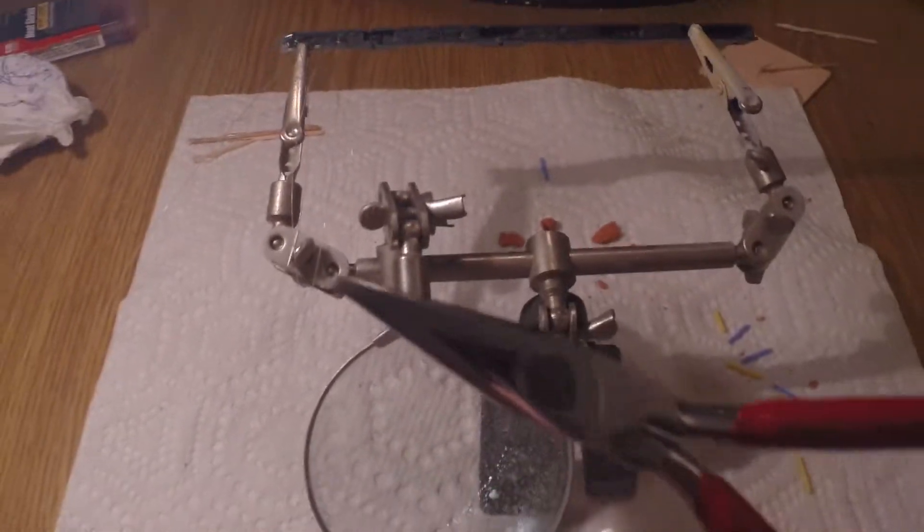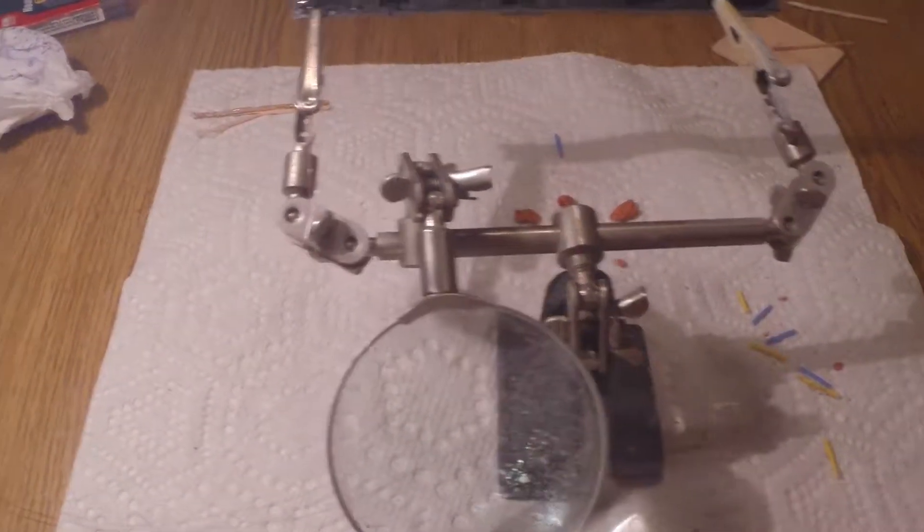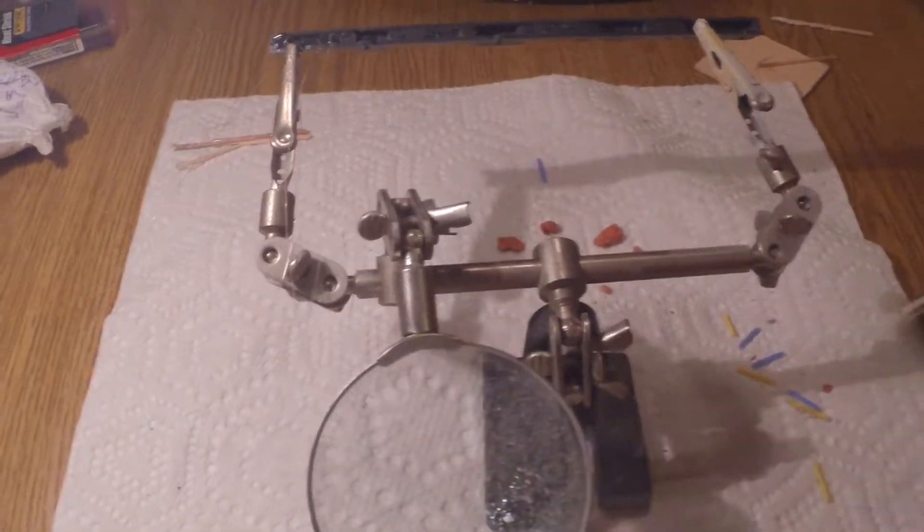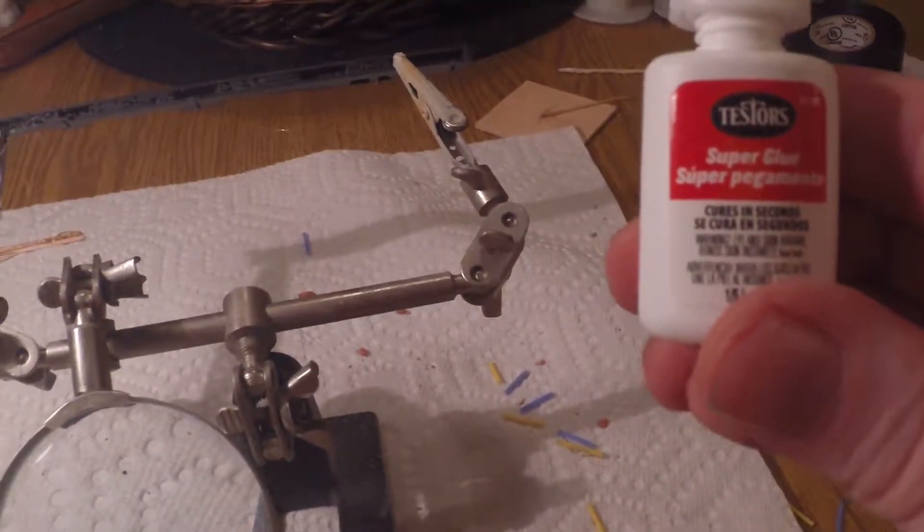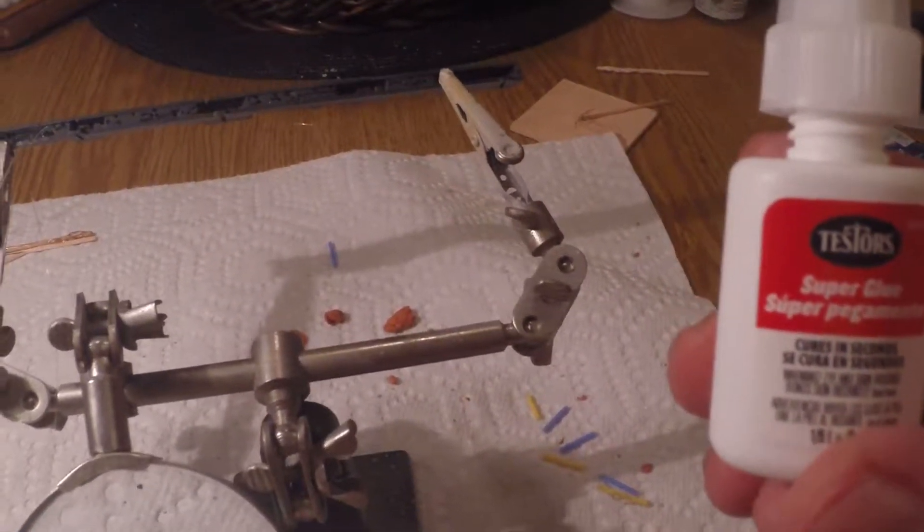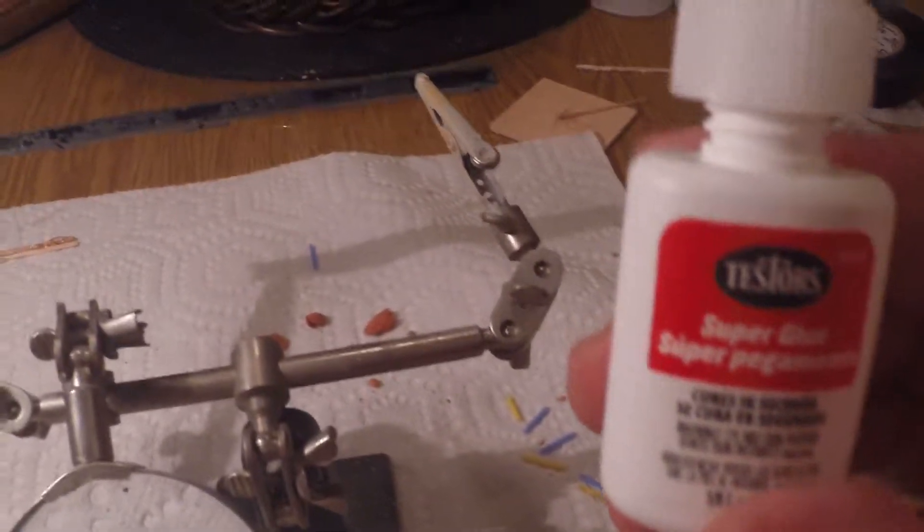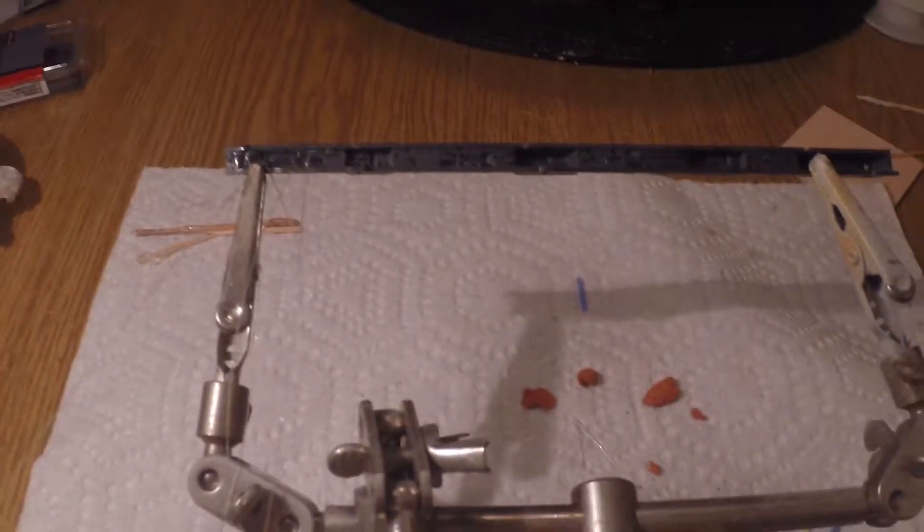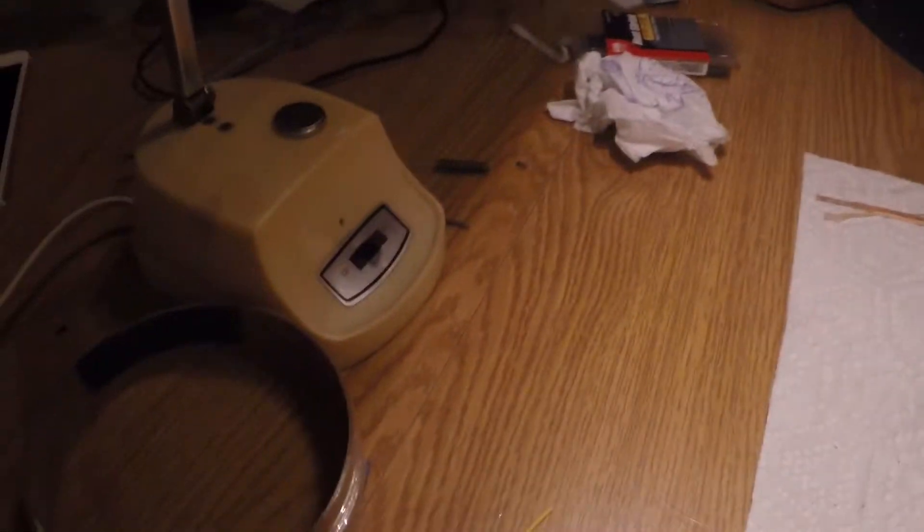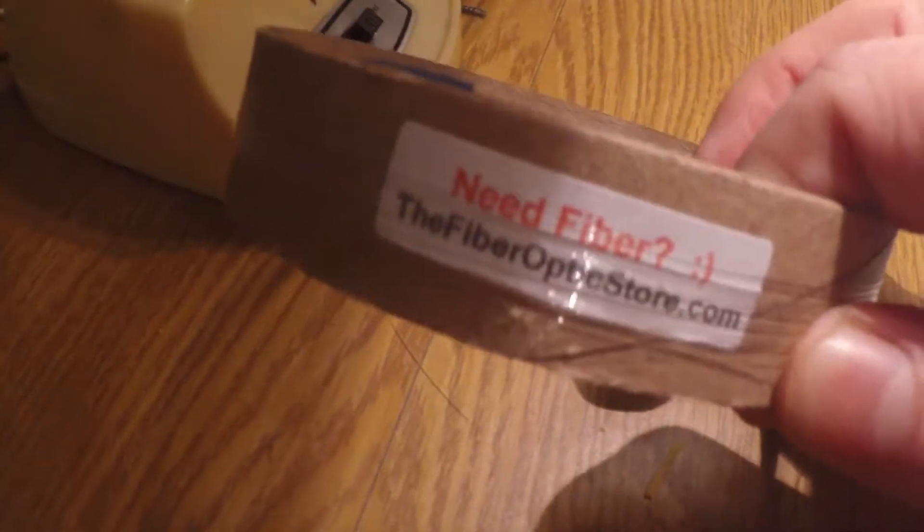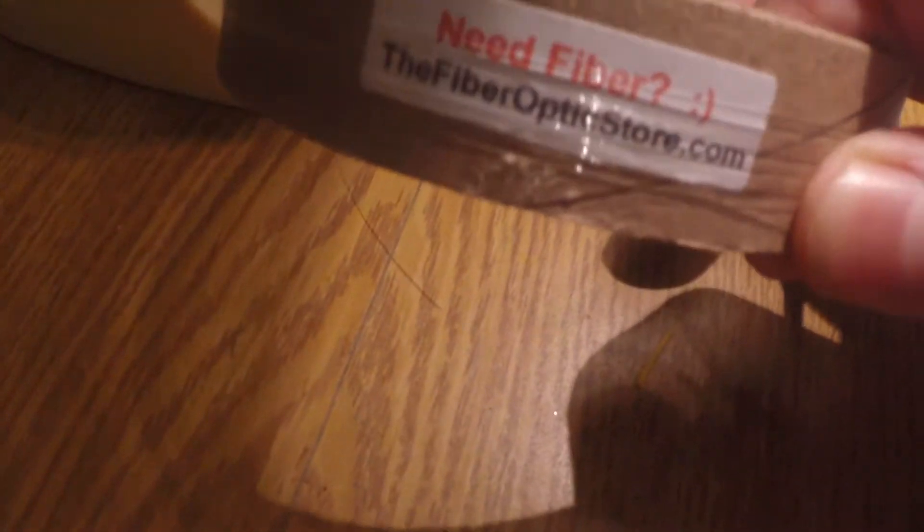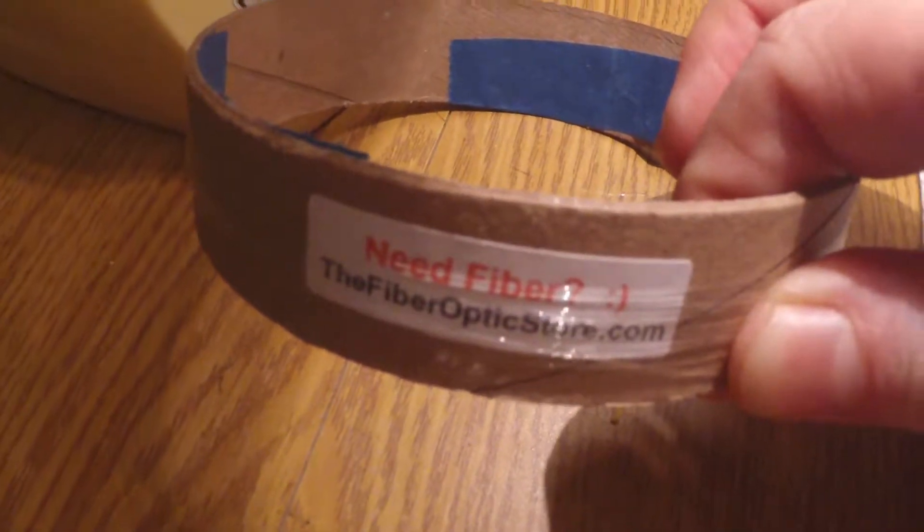Another thing that you would need is a small needle nose pliers, again the pin vise, and I got some Testors super glue. It's supposed to clear cure in seconds and what I do is I use that to secure the fiber optic strands in place. The next thing you'll need is some fiber optics appropriate for the model that you're doing. I got mine from the fiber optic store.